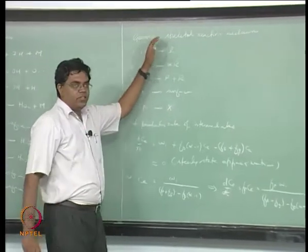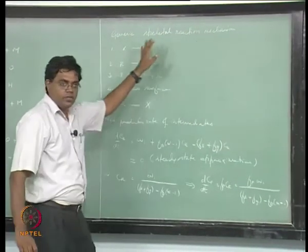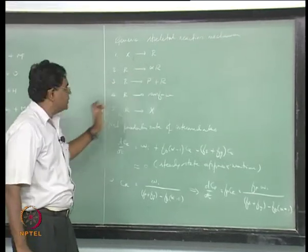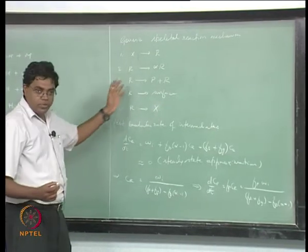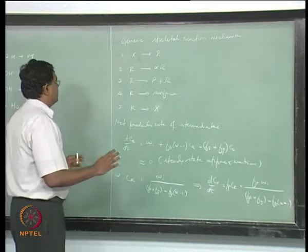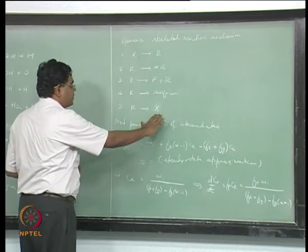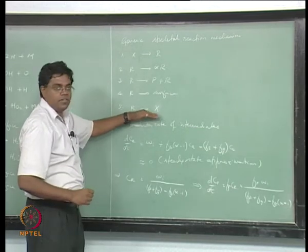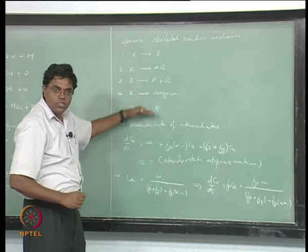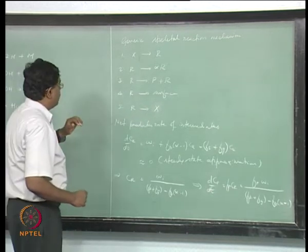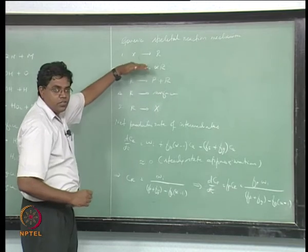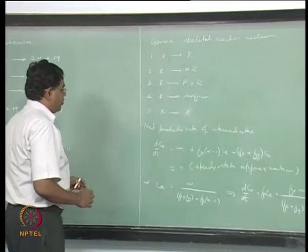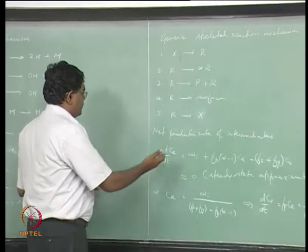We have been looking at a generic skeletal reaction mechanism — skeletal because we are only looking at intermediates. We are oblivious to the presence of other stable species, reactants, or products, except that we start and end with stable species. This is a gas-phase termination, this is a surface termination, this is a chain propagation step, and this is a chain branching step if alpha is greater than 1.